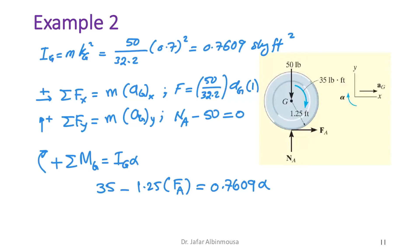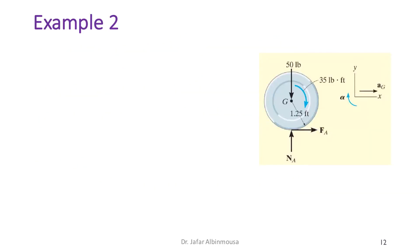Substituting I_G = 0.7609: 35 − 1.25·f_A = 0.7609·α. This is equation three. We still need a fourth equation.